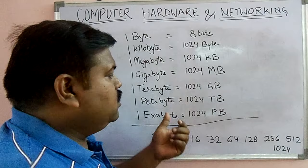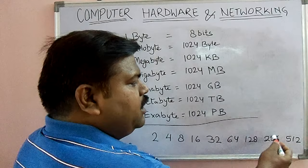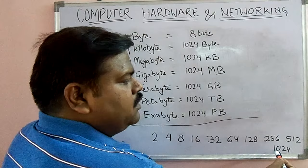In the binary number system, you keep doubling: 2, 4, 8, 16, 32, 64, then doubling it gives 128, doubling again gives 256, then 512, and here comes 1024.